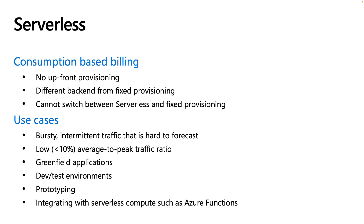Cosmos DB Serverless allows you to leverage consumption-based billing, which is ideal for smaller, low average-to-peak ratio scenarios. Serverless currently uses a different backend from provisioned, which brings some limitations. You can't switch between Serverless and provisioned billing model. Serverless supports a maximum of 5,000 request units per second and 50 gigabytes of storage. It is also limited to a single region and cannot take advantage of the Synapse Link feature. Serverless is ideal for smaller, unpredictable workloads. We'll cover the provisioning aspects and the pros and cons of each one later in this session.